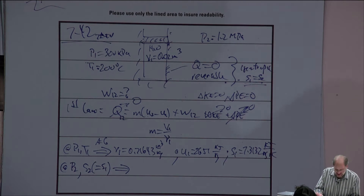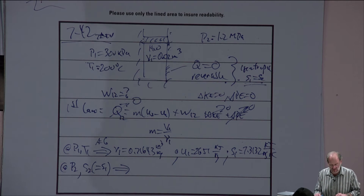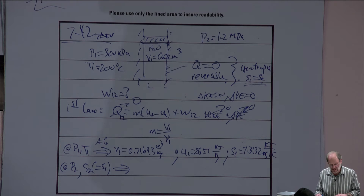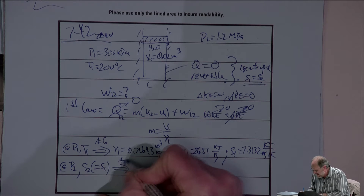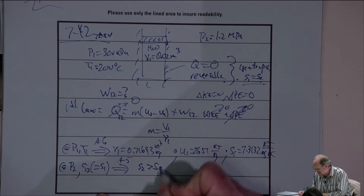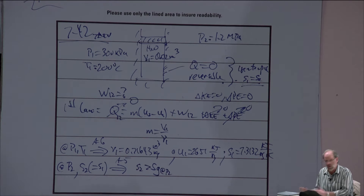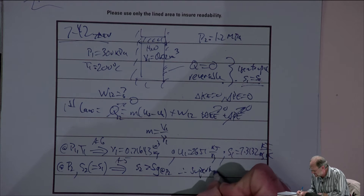Now for state 2: at P2 and S2 (which equals S1), it may not be entirely clear whether it's two-phase, saturated, or superheated. Doing the usual test by going into Table A5, we find that S2 is greater than Sg at pressure P2 — so clearly it's a superheated vapor. Therefore we go into Table A6 to find the data we need.